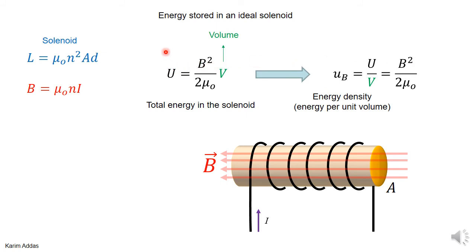We can take this equation for the total energy and then define something called the energy density, the energy per unit volume. If you take the total energy in the solenoid and divide by the total volume, this gives you the energy density, which turns out to be B squared over 2 mu naught.